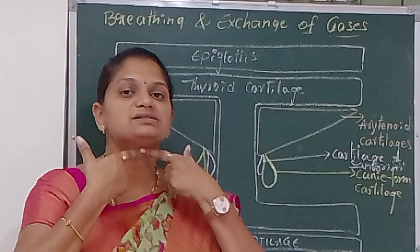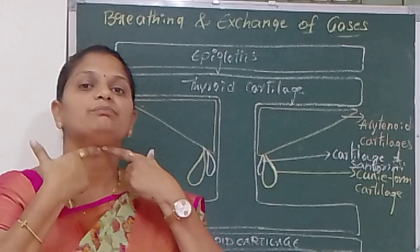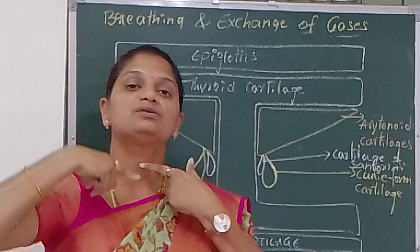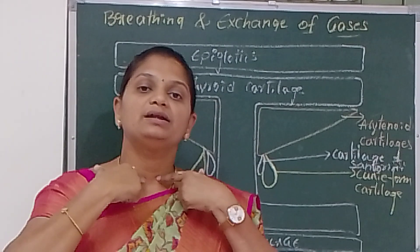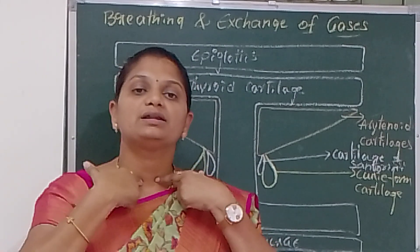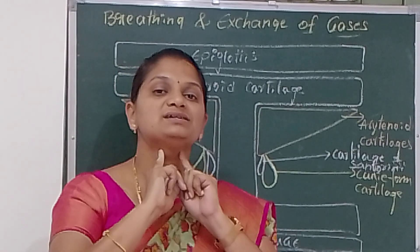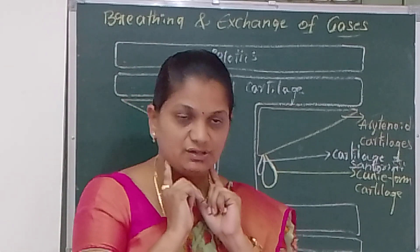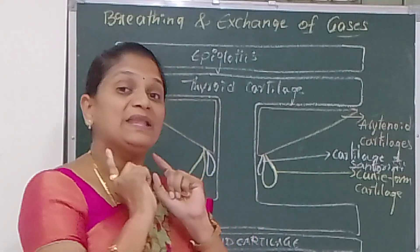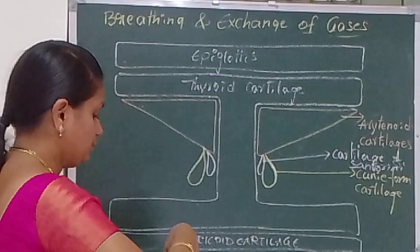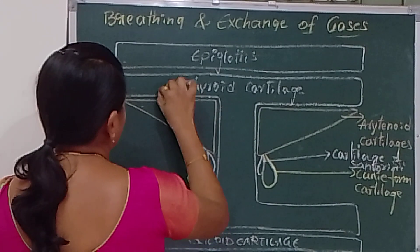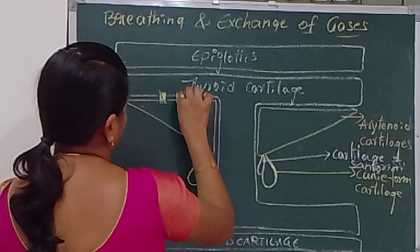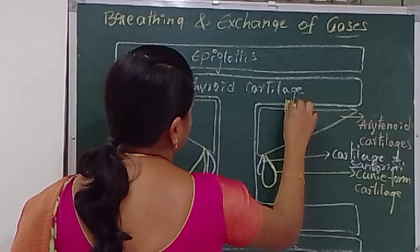For example, this is the epiglottis, and below this is the thyroid cartilage — it is open at the ventral side and closed at the dorsal side. Below that the cricoid cartilage is present, and on the lateral sides the arytenoid cartilage is present. Two pairs of vocal cords are present, positioned between the thyroid and arytenoid cartilages.